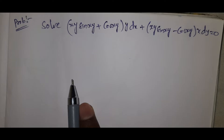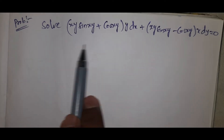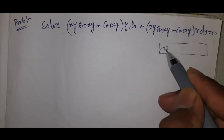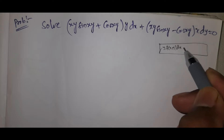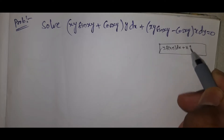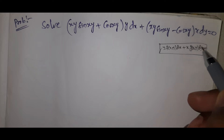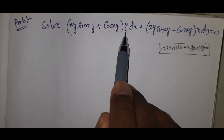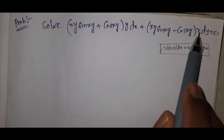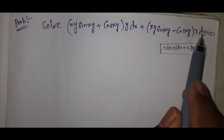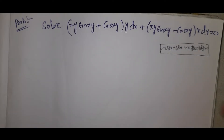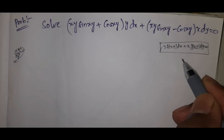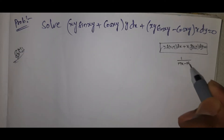We will explain that the non-exact problem is not the exact problem. First, we will tell you what is the exact problem. The second method is y·f(x)dx plus x·g(y)dy equal to 0. The second method uses 1 by mx minus ny.